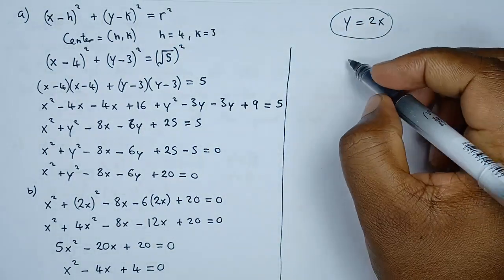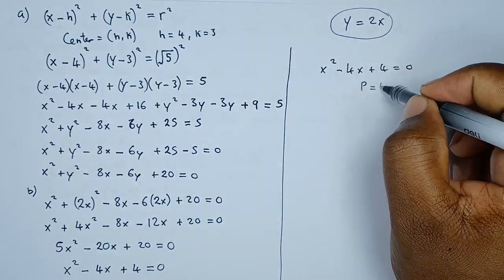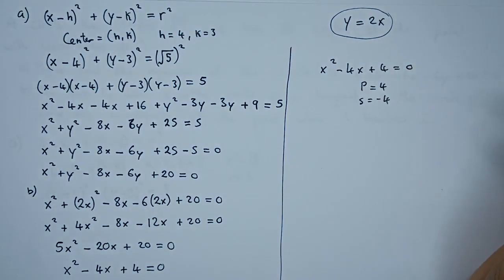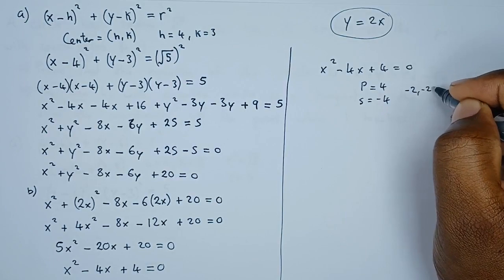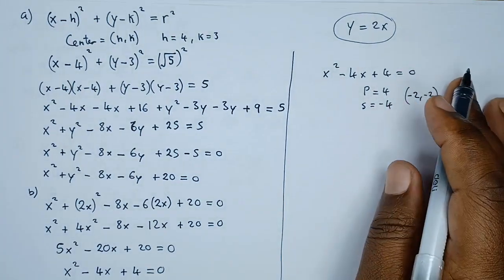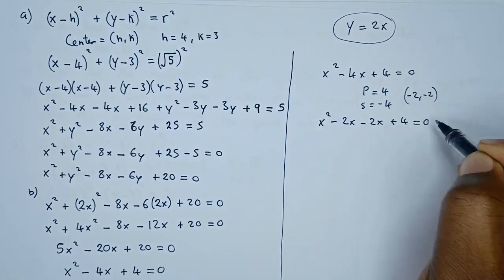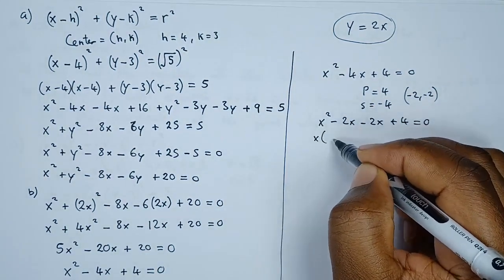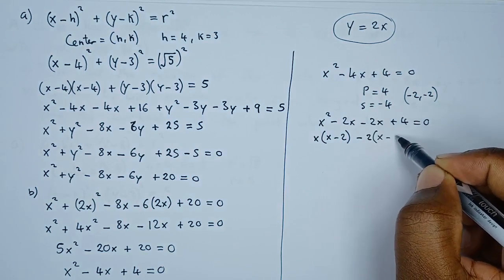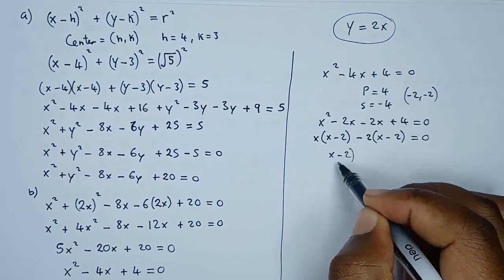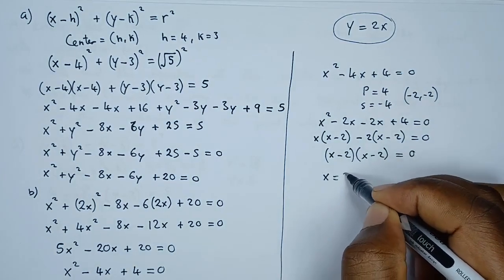Using factorization: the product is 4 and the sum is negative 4. The two numbers are negative 2 and negative 2. Factoring gives (x minus 2)(x minus 2) equals 0, so x equals 2. Since it's a repeated root, there is only one x-coordinate, confirming it is a tangent point.